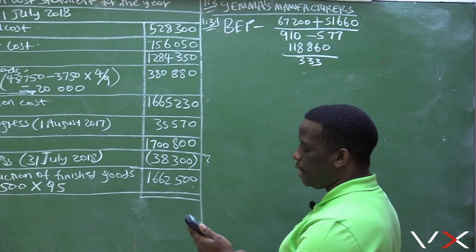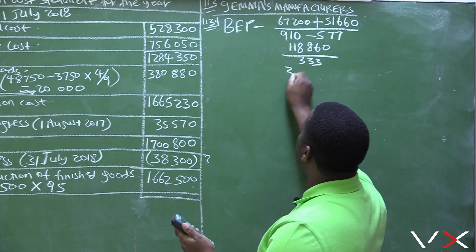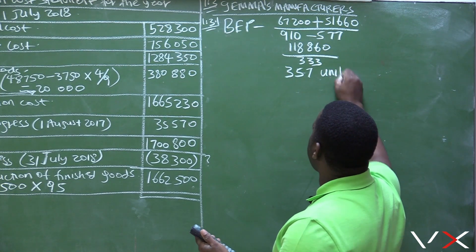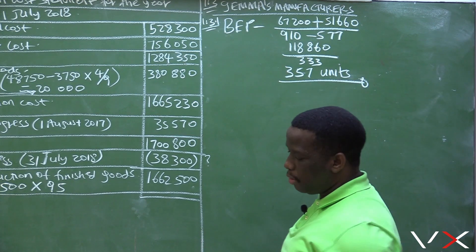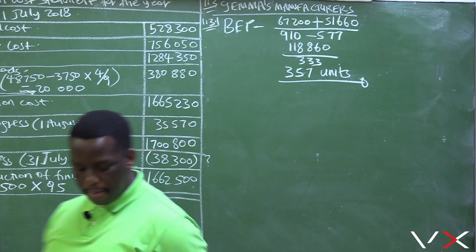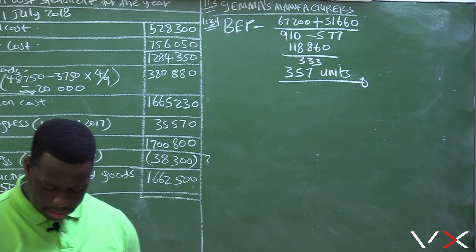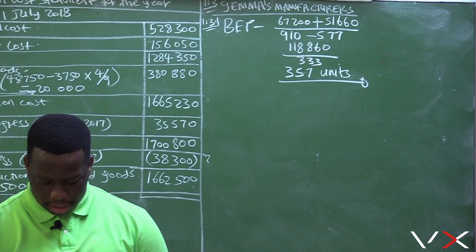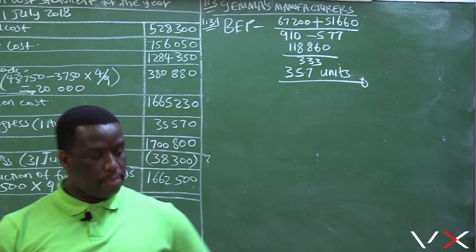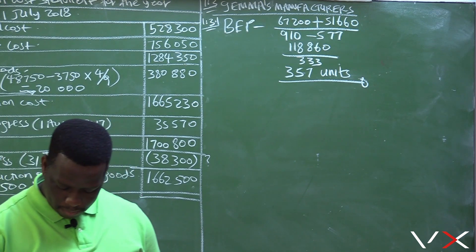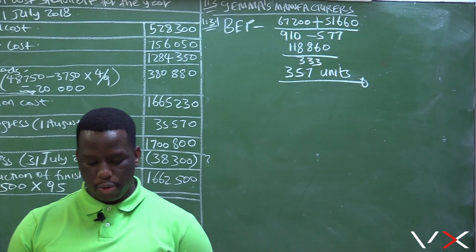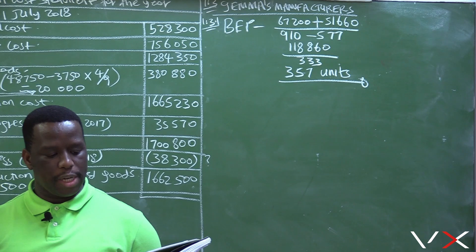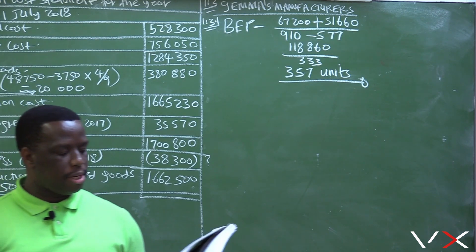$118,860 divided by $910 minus $577 equals $333. So $118,860 divided by $333 equals 356.9, which we round off to 357 units. The total number of units produced and sold is 420 units.